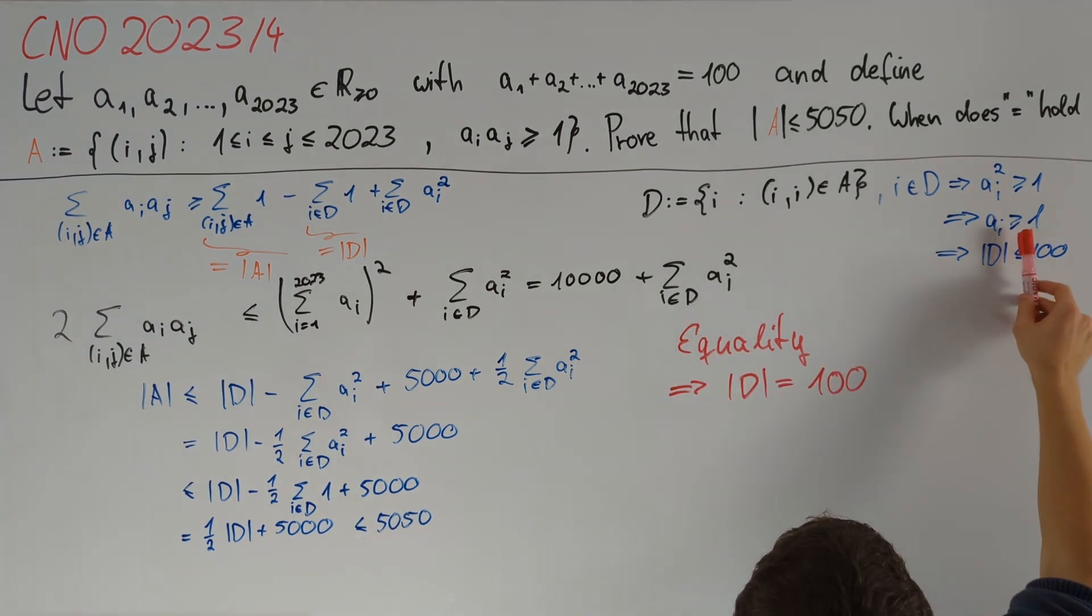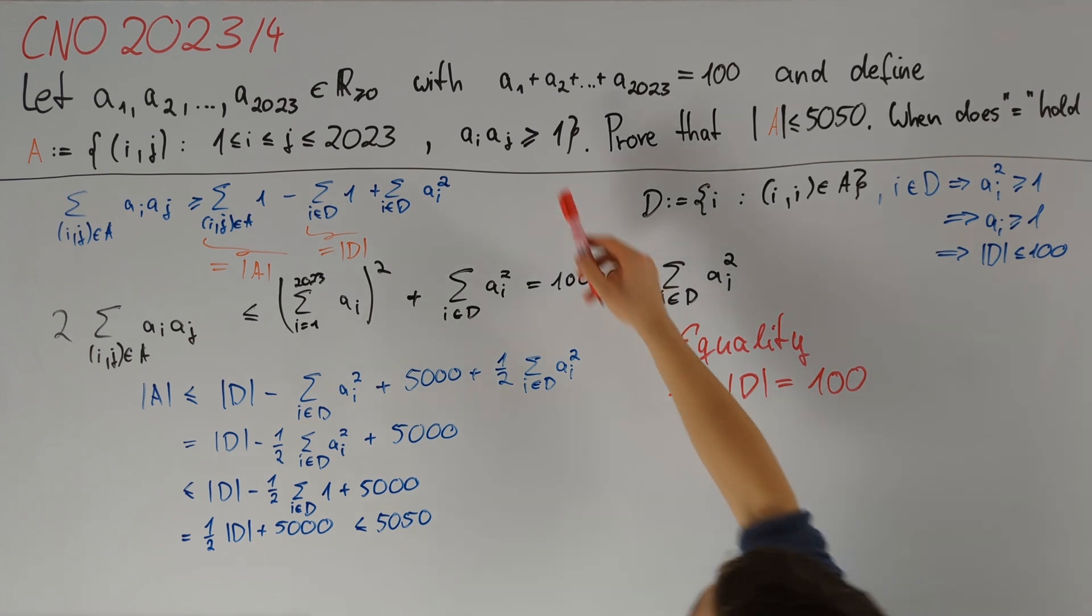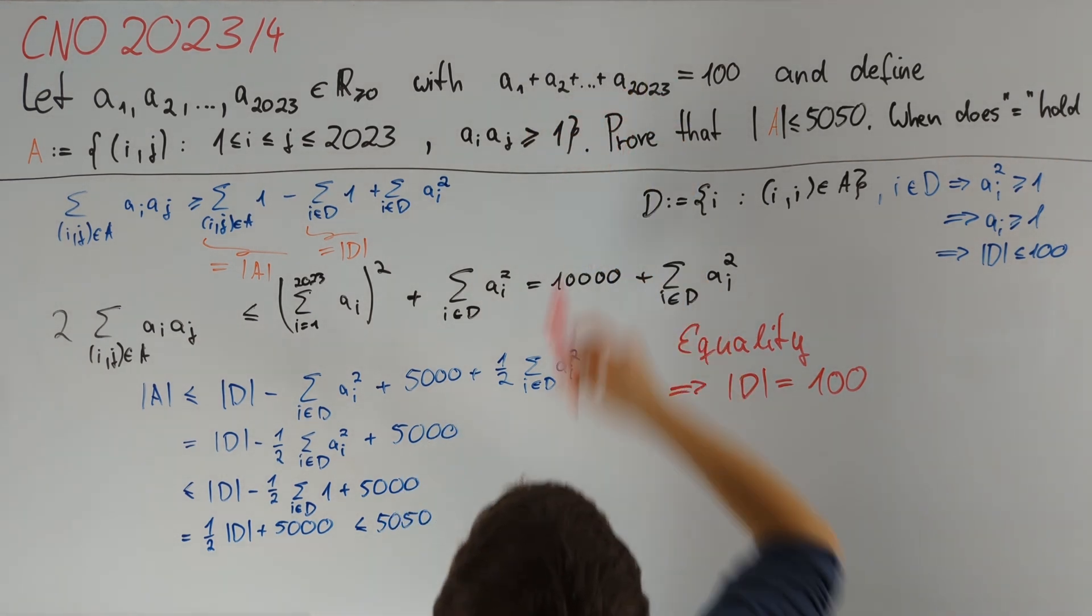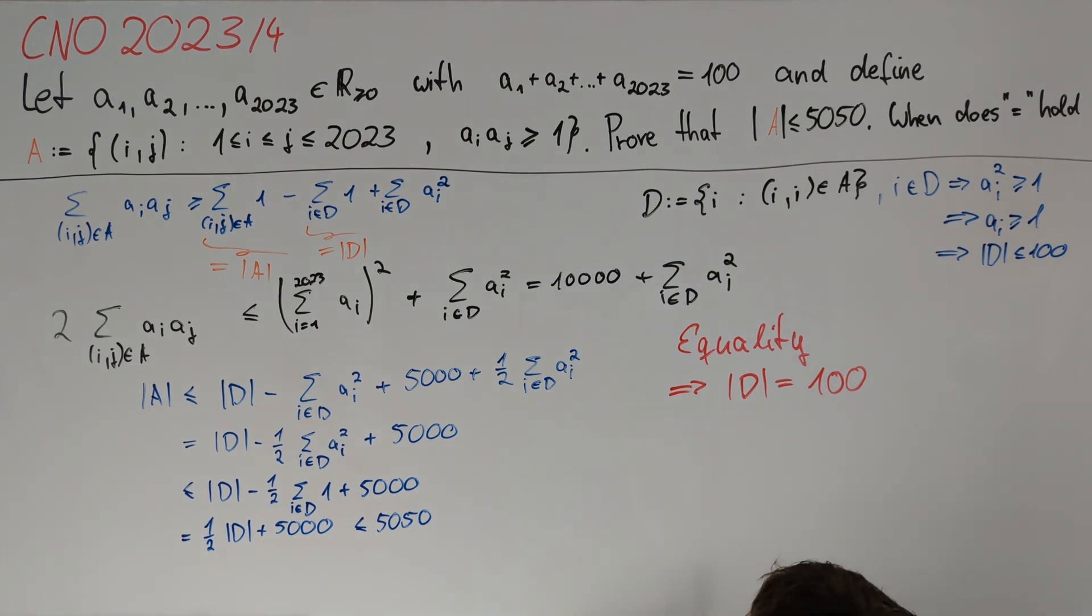Since a_i is greater than or equal to 1 for i in d, this implies that 100 of the a_i are greater than or equal to 1. And since the sum a1 plus a2 plus up to a2023 equals 100, this implies that these 100 a_i are exactly equal to 1 and all others equal 0.